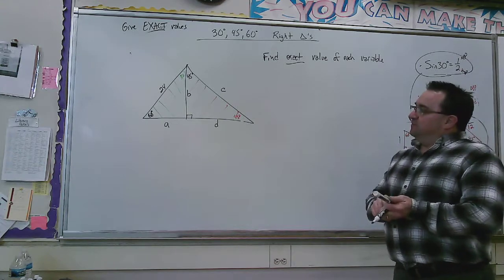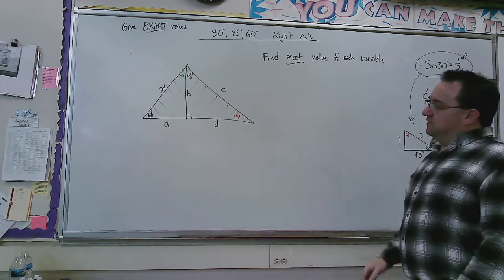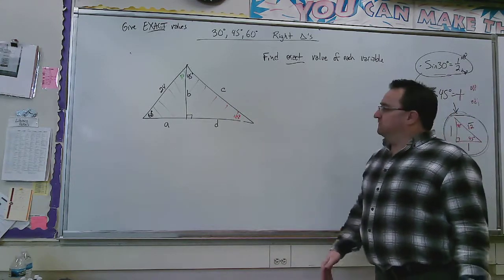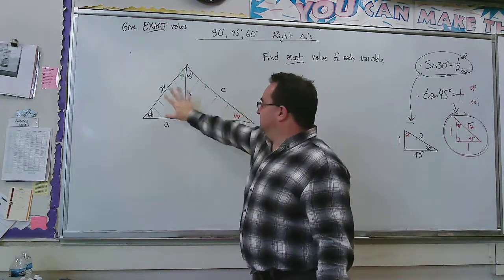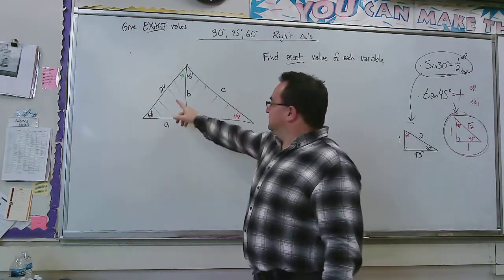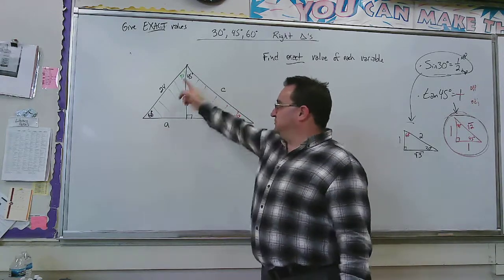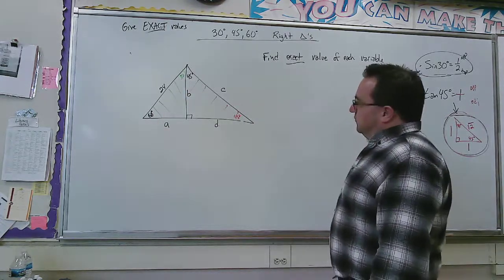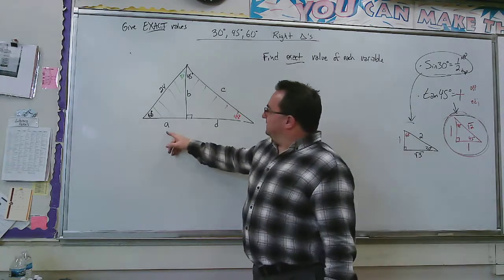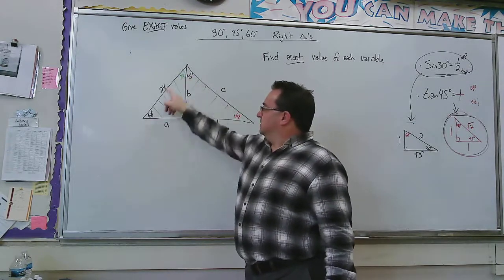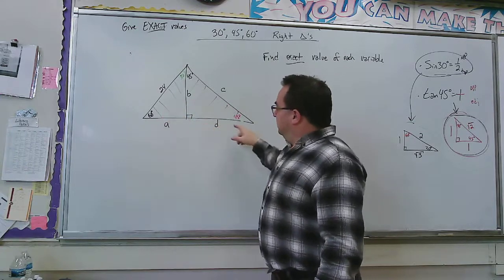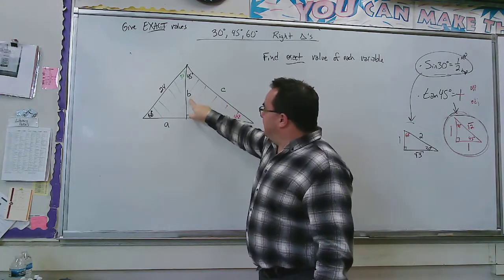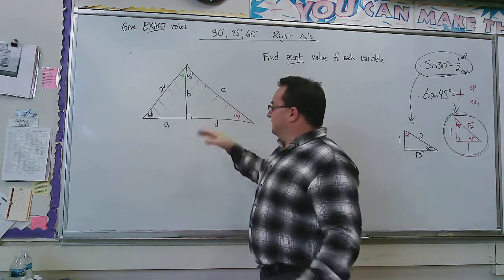So the directions say to find the exact value of each variable. So that word exact means you're going to have to have those square roots in them. You can't have decimals. Well, look at my triangles. If that's 60, then that's 30. So see this triangle right here? That's this one. And if this is 45, then this is 45. So you see this triangle right here? That would be this one. So we're not going to do everything at once. I would start with the triangle we know the most information in, right? I only know this angle. So I would start with the green triangle because I know a side and an angle, actually a couple of them.